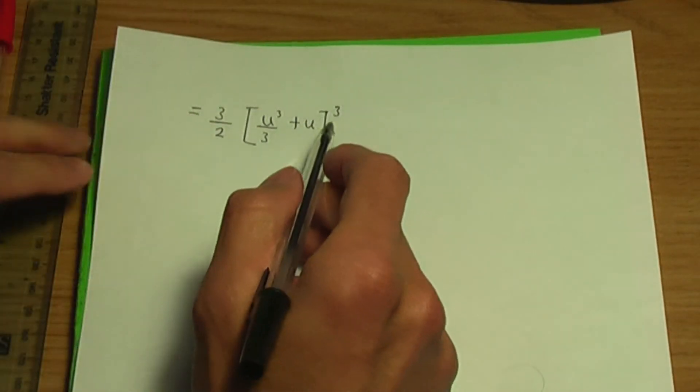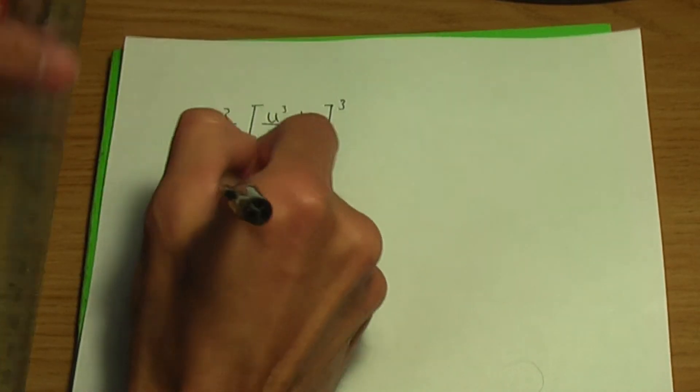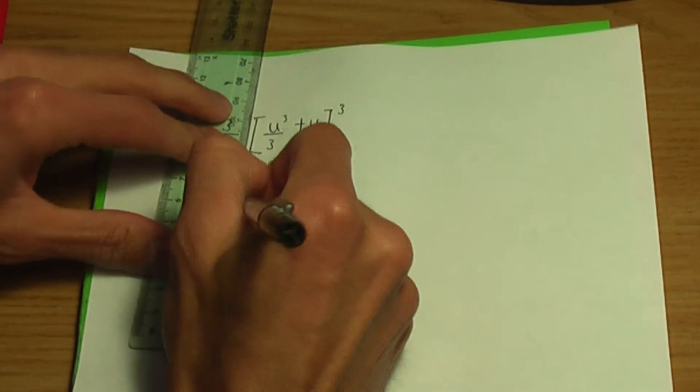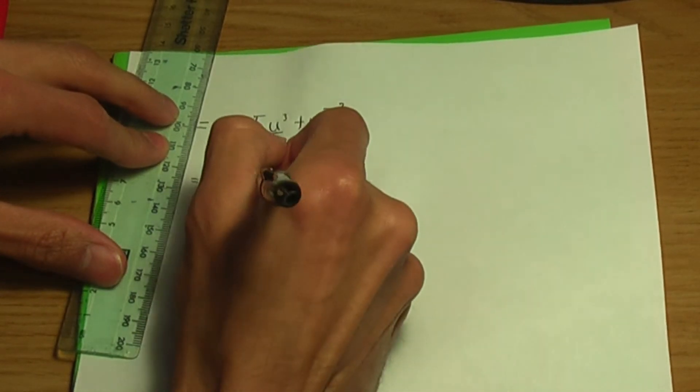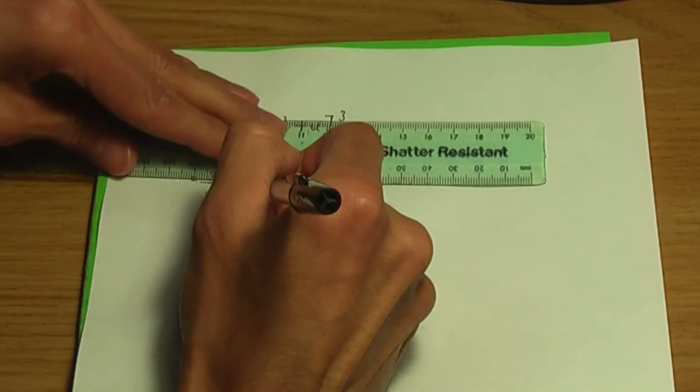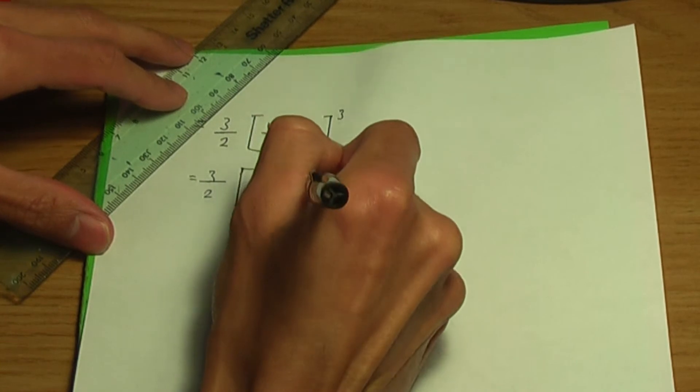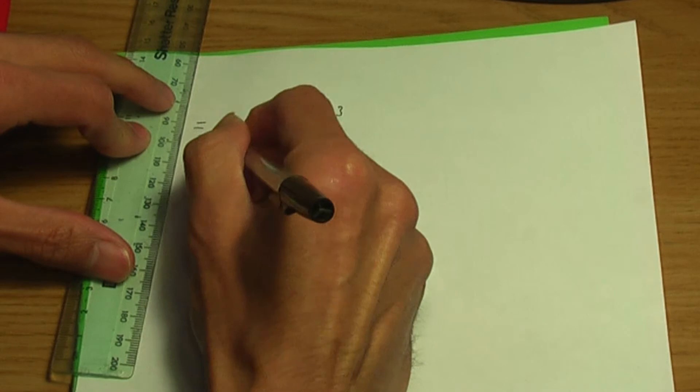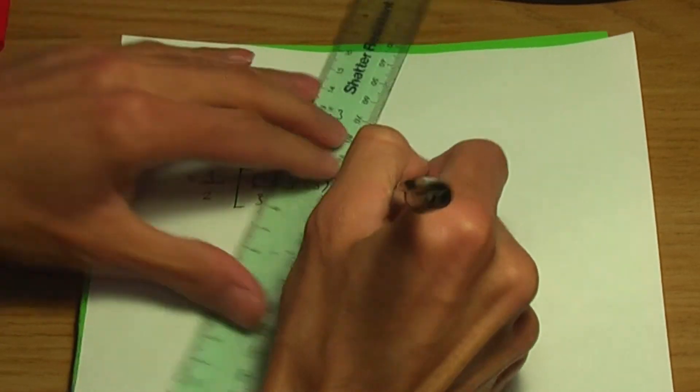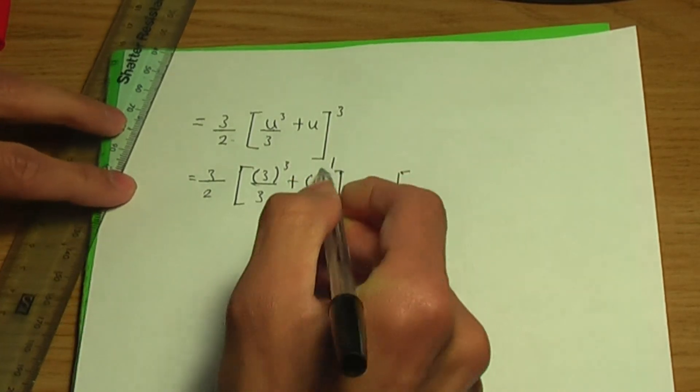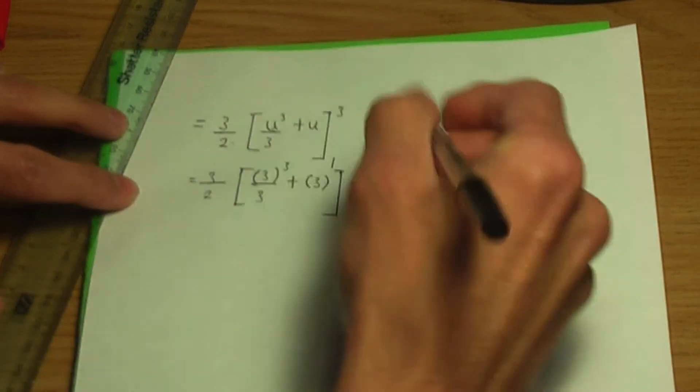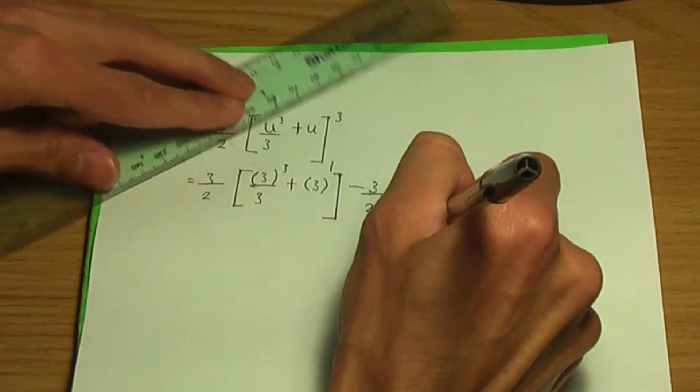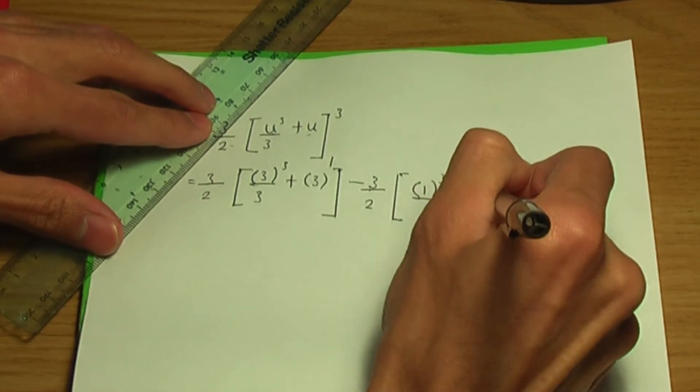When you replace the upper limit, and the upper limit is 3, we're going to have 3 over 2 into u replaced by the upper limit 3. So, 3 cubed divided by 3 plus u, which is 3, minus 3 over 2. And upon replacement of the lower limit, the lower limit being 1, we're going to have u which is 1. So, 1 cubed divided by 3 plus the u being 1.